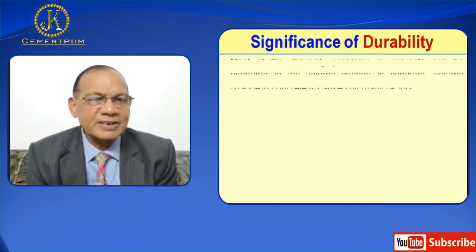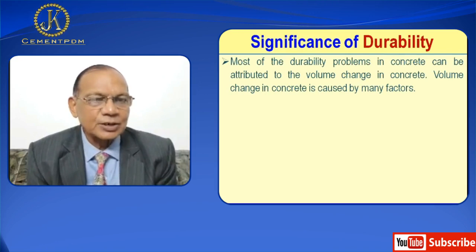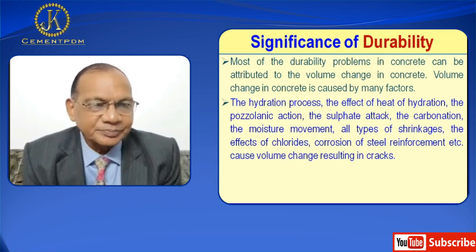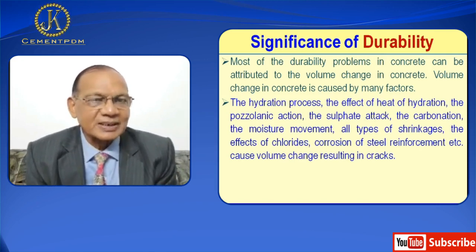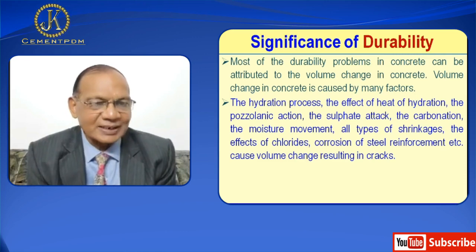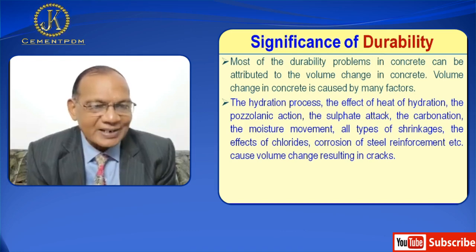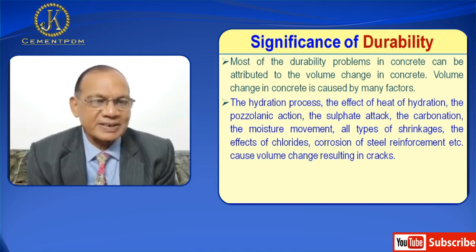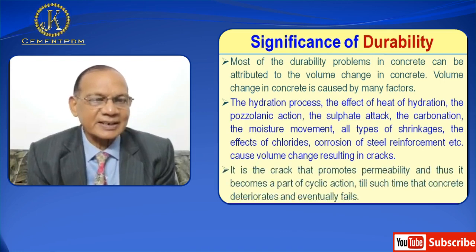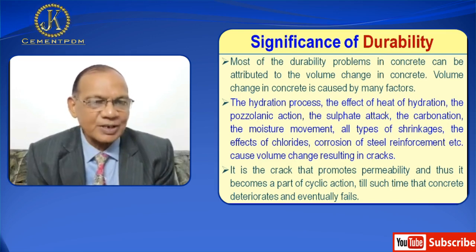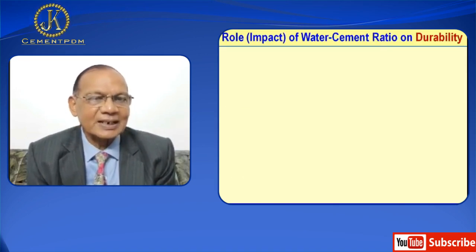Most durability problems in concrete can be attributed to volume change. Volume change in concrete is caused by many factors: the hydration process, the effect of heat of hydration, the pozzolanic action, sulfate attack, carbonation, moisture movement, all types of shrinkage, effects of chlorides, corrosion of steel reinforcements, etc. These cause volume change resulting in cracks. It is the crack that promotes permeability, and thus it becomes part of a cyclic action until the concrete deteriorates and eventually fails.